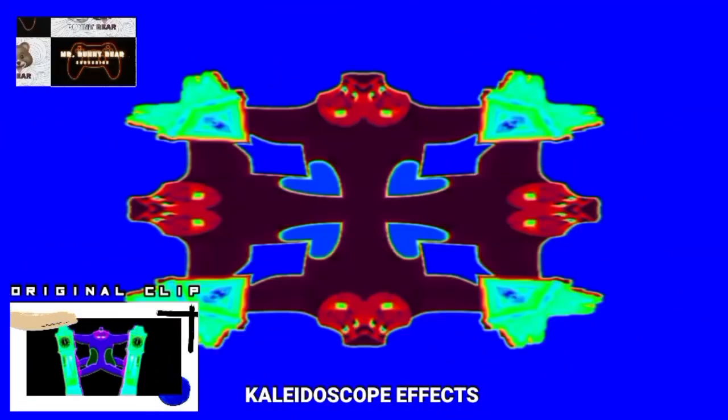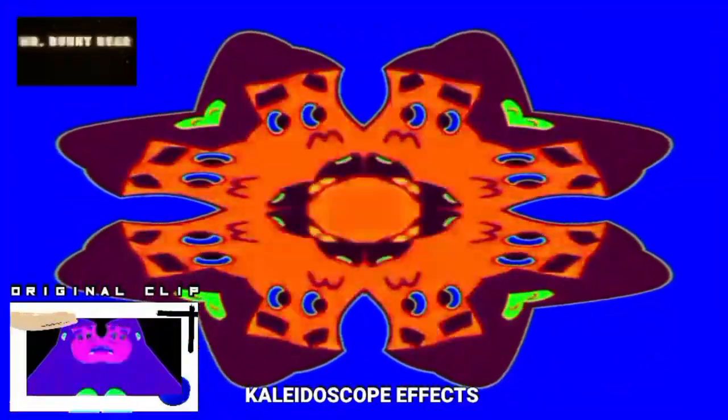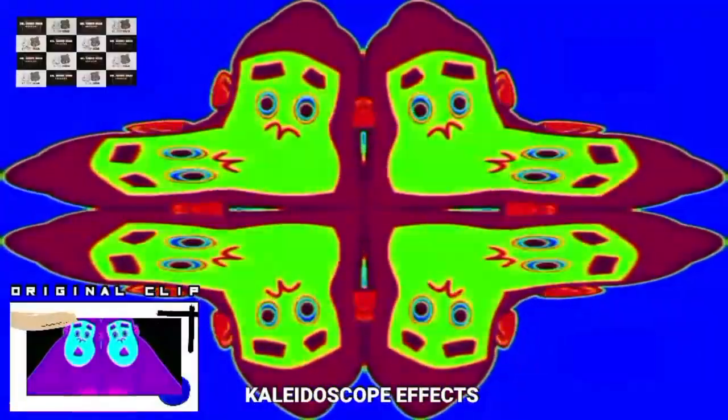The kaleidoscope effect: this video effect is an optical instrument with two or more reflecting surfaces tilted to each other at an angle, so that one or more objects on one end of the mirrors are shown as a regular, symmetrical pattern when viewed from the other end due to repeated reflection. This video clip is dominated by the gorilla scene.